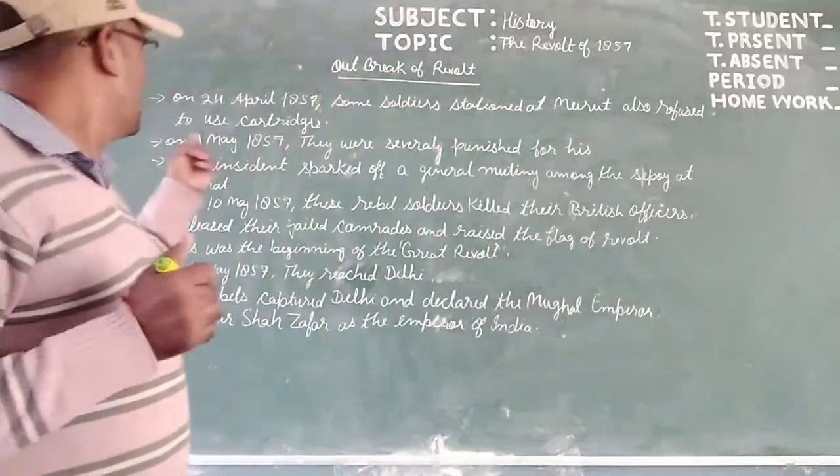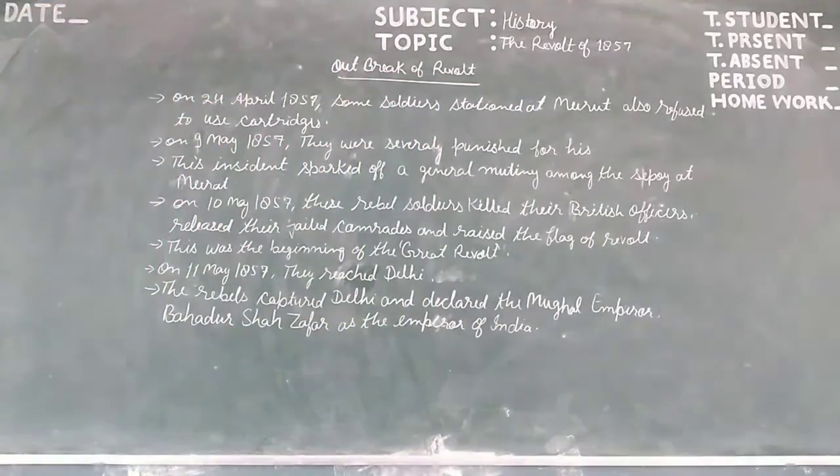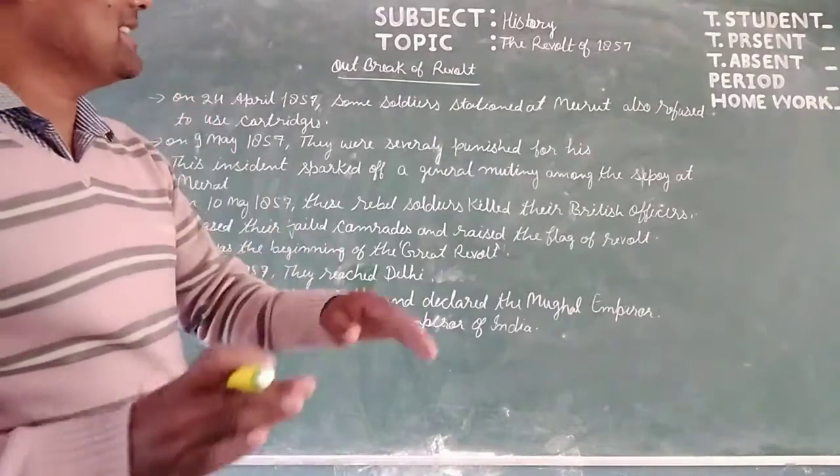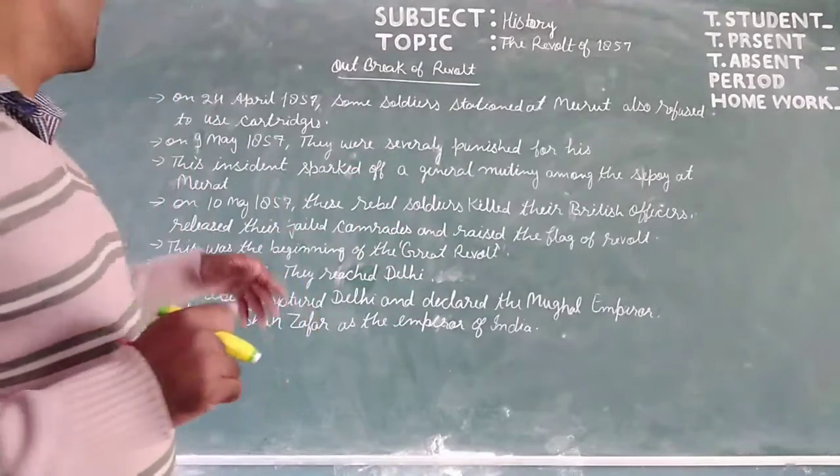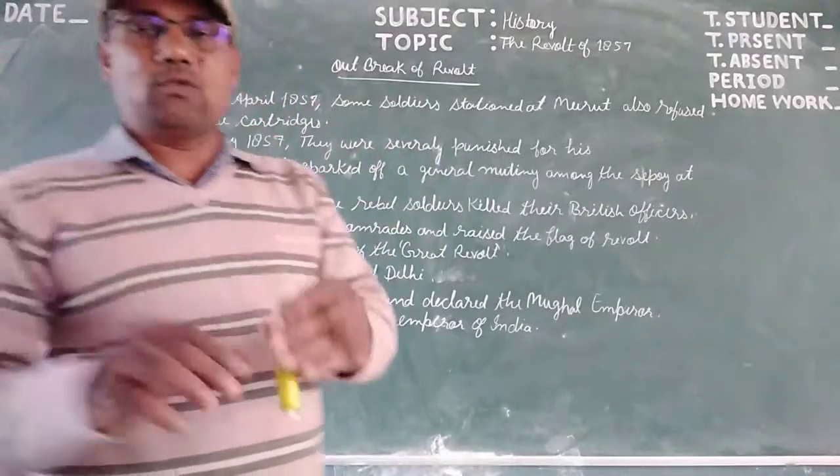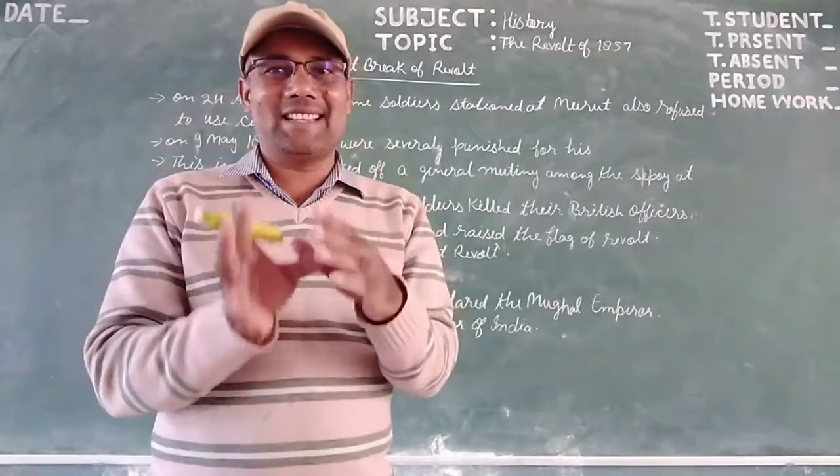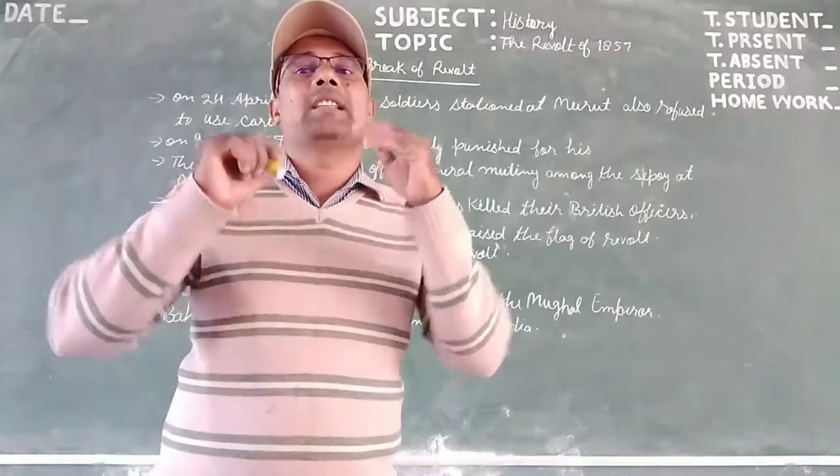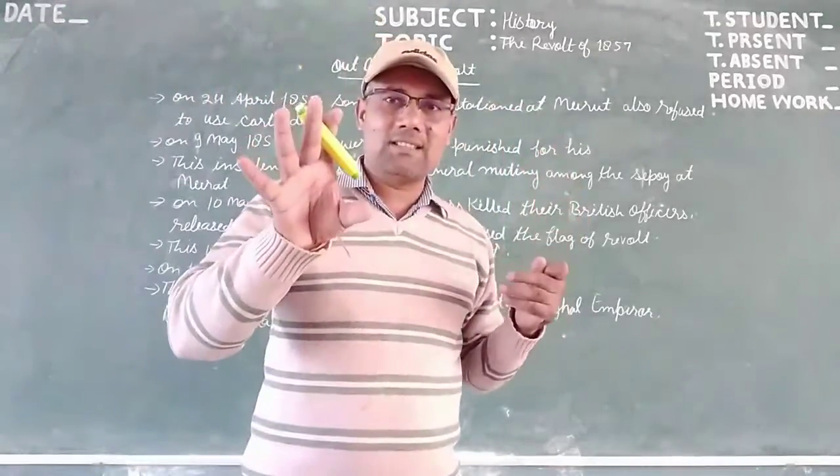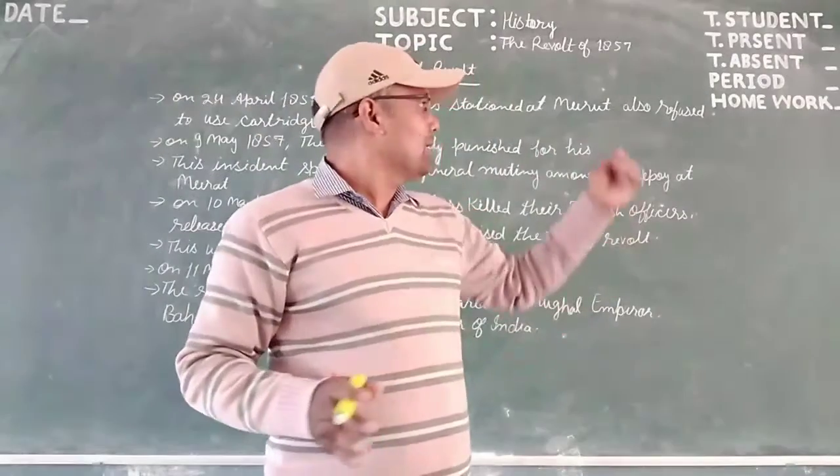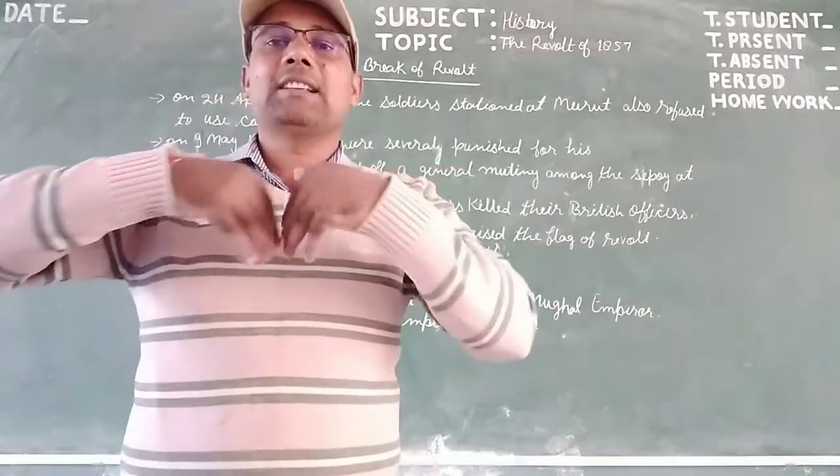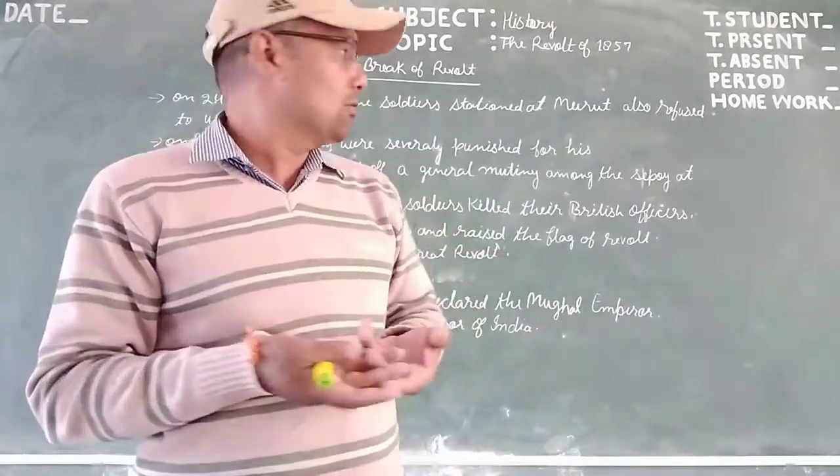So students, on 24th April 1857, some soldiers stationed at Meerut also refused to use cartridge. Some soldiers at that station, that place where the start of the revolt. Meerut is the place where the revolt of 1857 started.